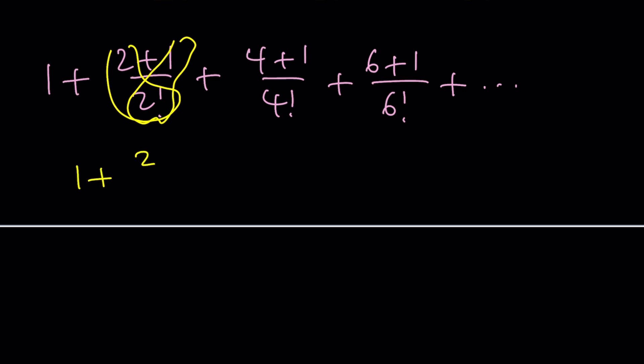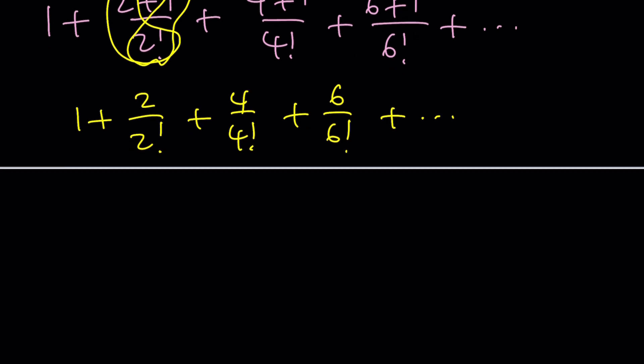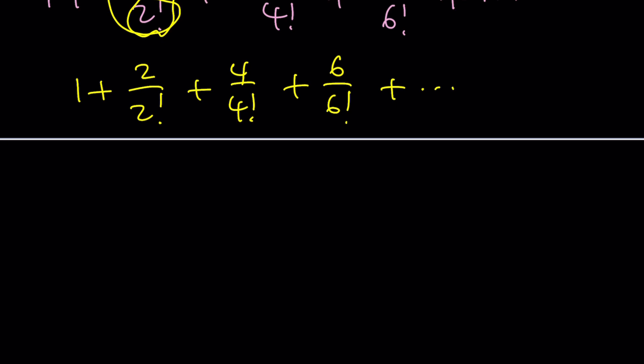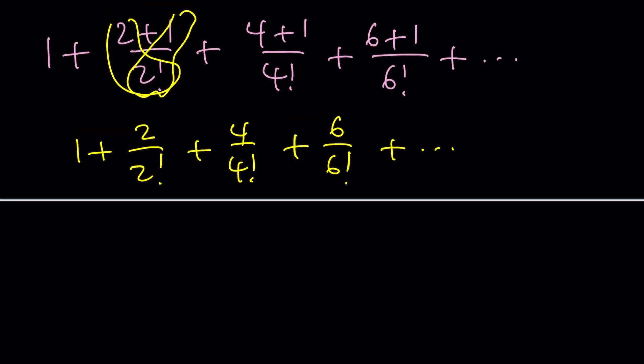So we can express it actually in two different rows. One plus 2 over 2 factorial and then 4 over 4 factorial and then 6 over 6 factorial. And then the ones, all the numerators are ones but the same denominators. So it's going to be like 1 over 2 factorial plus 1 over 4 factorial plus 1 over 6 factorial and so on and so forth.